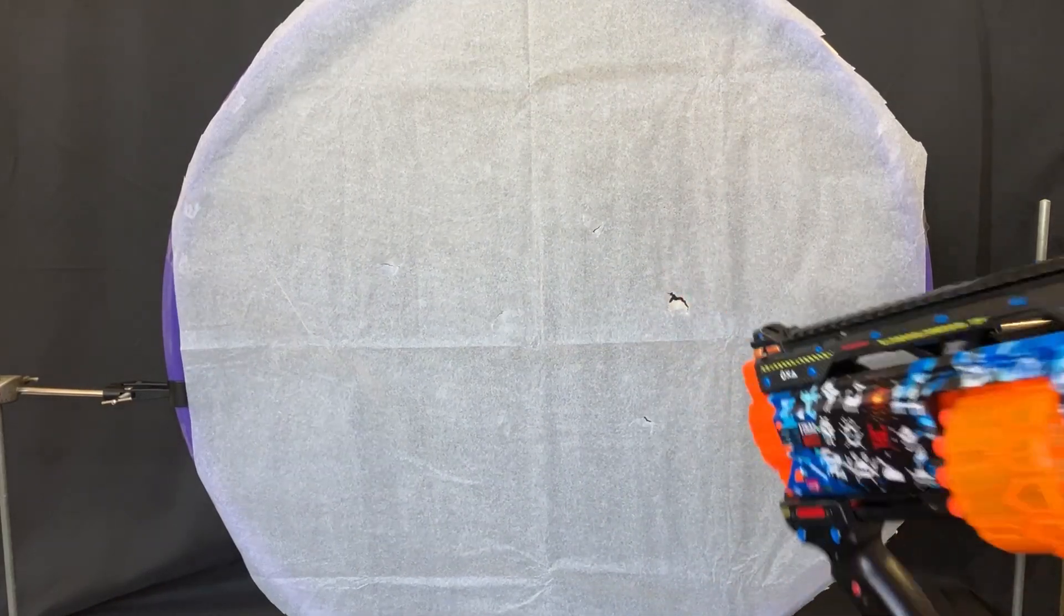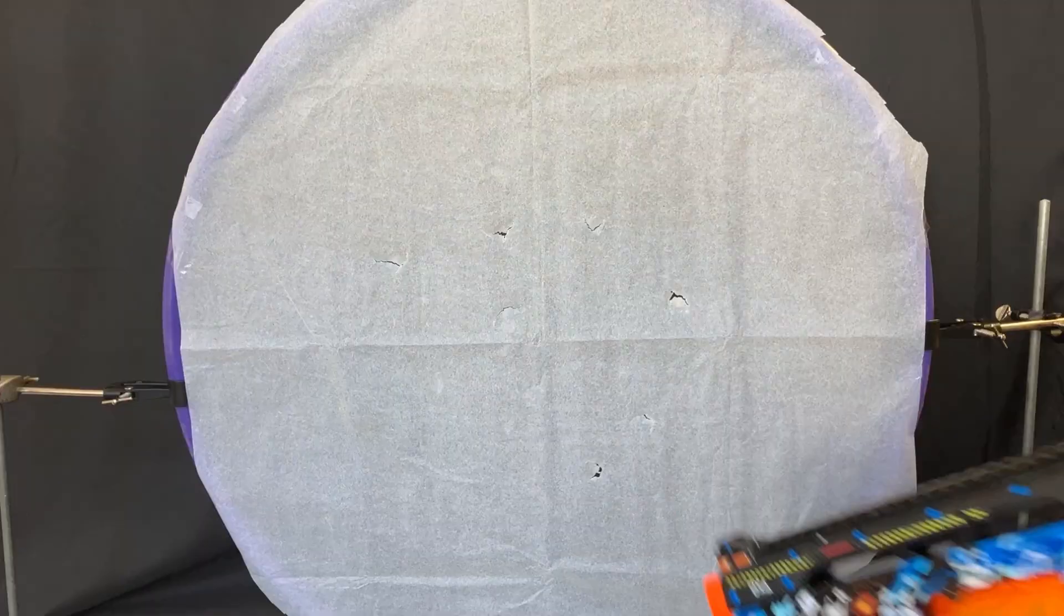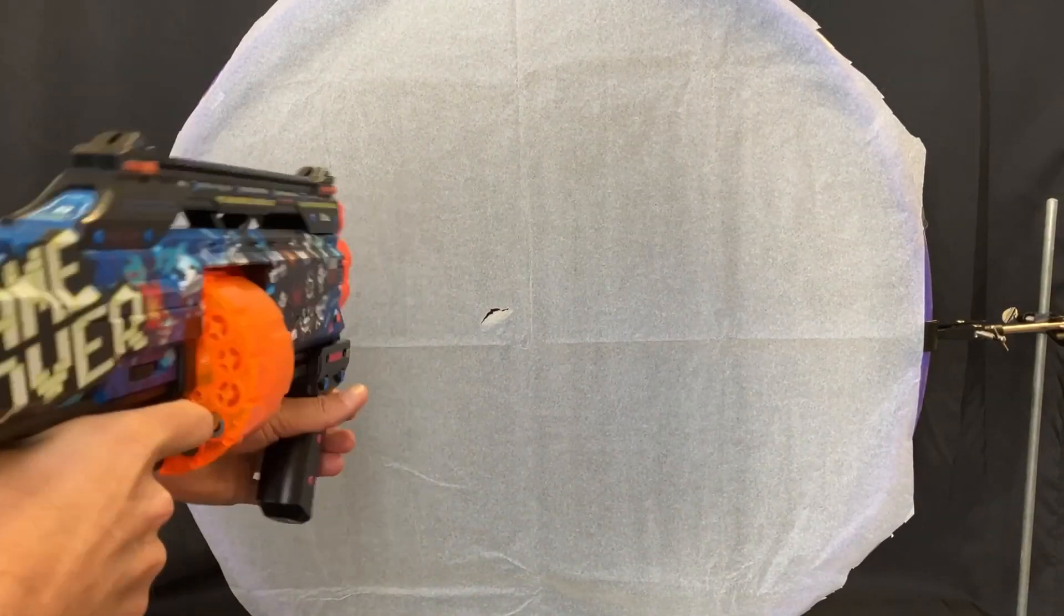This is a fun way to teach models of the atom. You start off with some tissue paper stretched over a hula hoop representing the plum pudding model of the atom.